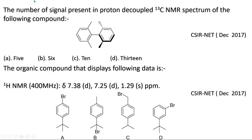Now come to the next question. The organic compound that displays the following 1H NMR data is — they have given three data: 7.38 doublet, 7.25 doublet, 1.29 singlet in ppm. This question is asked in CSR Net December 2017 and is one of the easiest questions ever. If you see the options, only option A has exactly three chemical shift values.